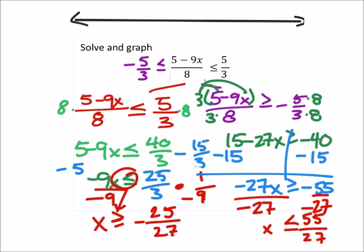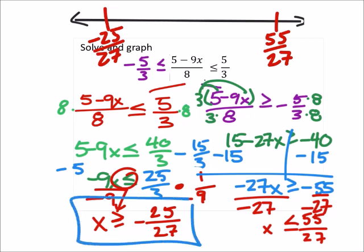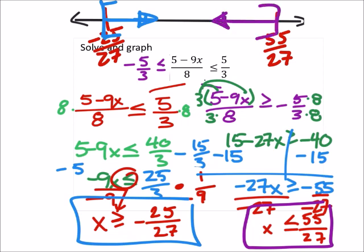Now that we have those two, we can graph them. So I've got a negative 25/27 here, and we'll just put 55/27 on this side. And with that, this one, I guess we'll do it in blue. That one's eating the x, and it's equal to, so we've got a bracket. This one's going to the right. On this other one, which we'll do in purple, this one, it's not eating the x, so it goes to the left. It's also equal to, so we have square brackets. And it's just the intersection of these two.